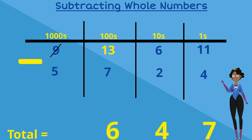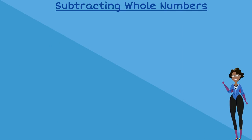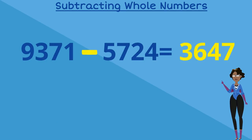And for our last column, the thousands column, we have 8. Since we borrowed 1 from it, it's no longer 9. 8 take away 5 is equal to 3. So our final answer for 9,371 subtract 5,724 is 3,647.